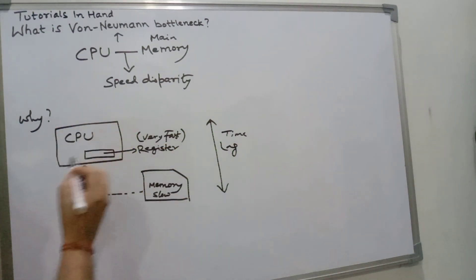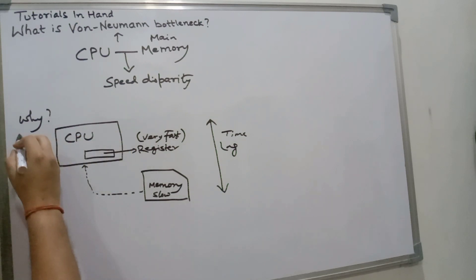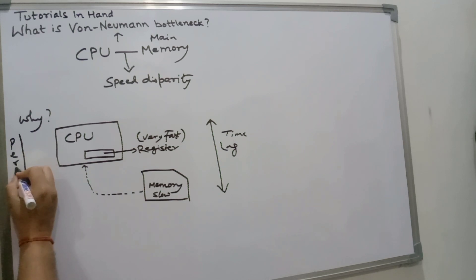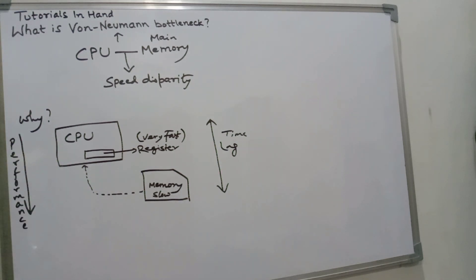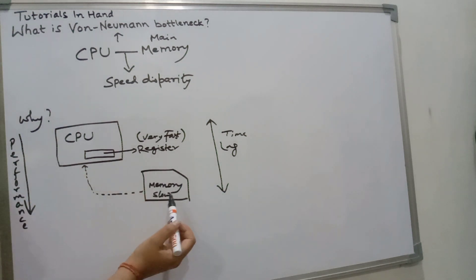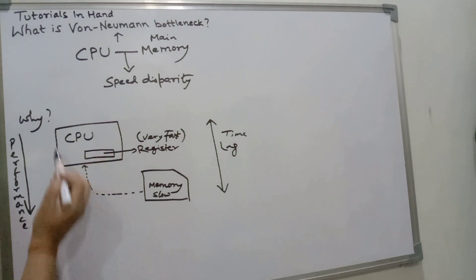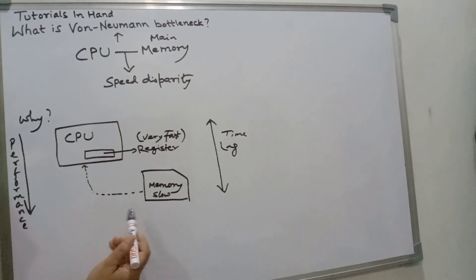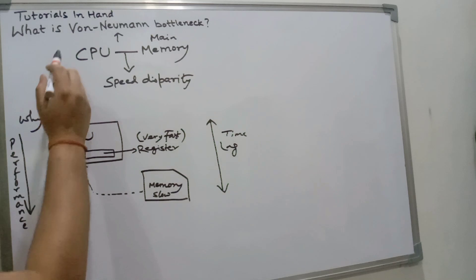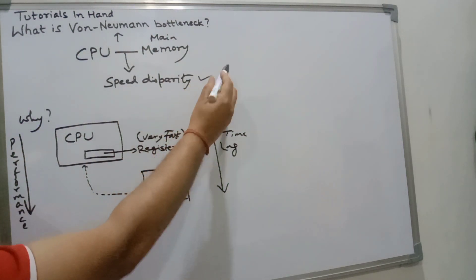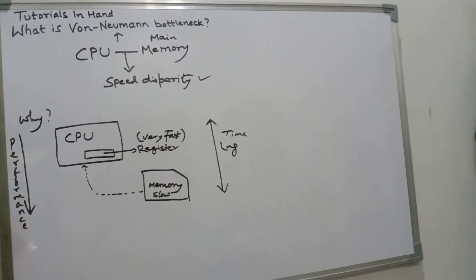As a result of this time lag between the data and instructions provided by main memory to the CPU, the overall performance of the computer takes a hit — performance is decreased. This is because the CPU does not get data and instructions from main memory at the pace it requires to process them, giving rise to the Von Neumann bottleneck.